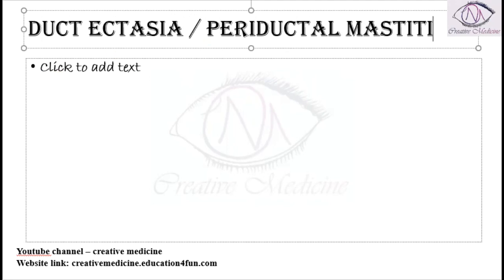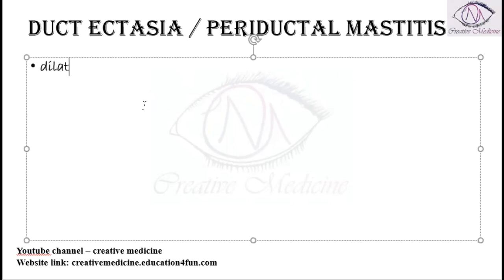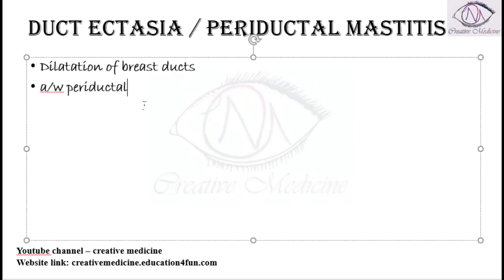In duct ectasia or periductal mastitis, there is dilatation of the breast ducts, and this dilatation is also associated with periductal inflammation. Ductal ectasia is more commonly seen in smokers.